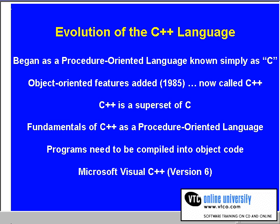Keep in mind that the different C systems, such as Visual C and Borland C Builder, are not different languages. Rather, they are different implementations of the same language. Although I will be using Microsoft Visual C++ version 6 to create programs, you will be able to use the C instructions that you learn in most C systems.